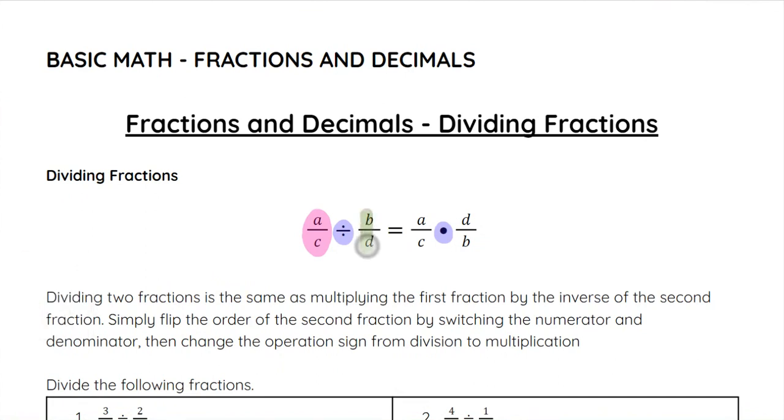And then we will take the second fraction, and we will flip-flop the top and the bottom. So we're going to switch places with the top, the numerator, and the bottom, the denominator. Those are going to change places, and that is how we are going to set up our new problem that we will then multiply across the top and across the bottom like we did with multiplying fractions.